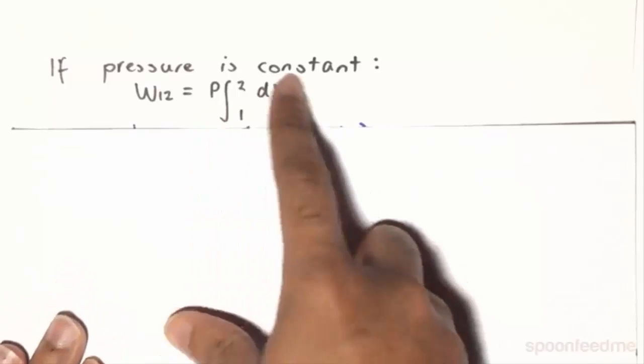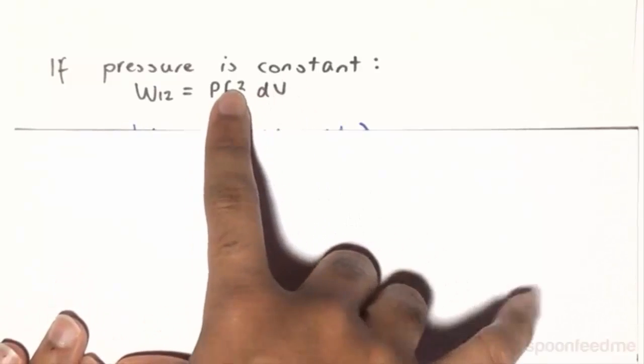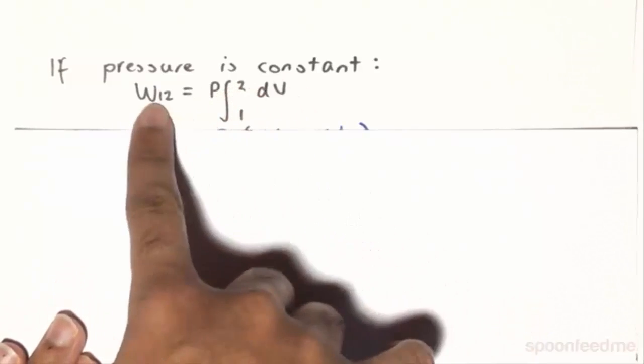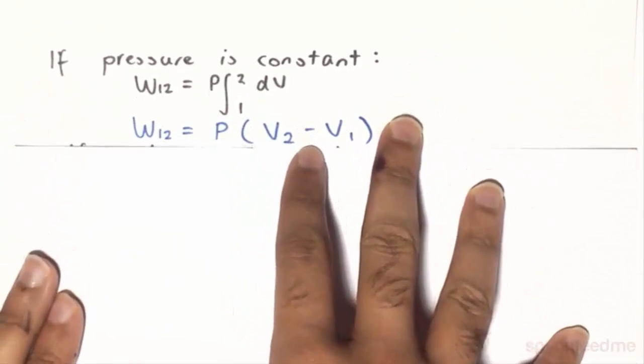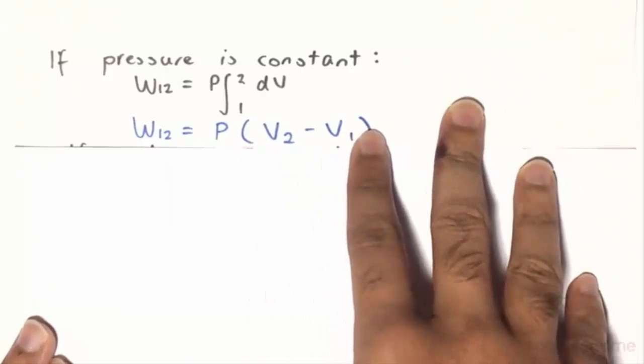And as such, if we evaluate this integral, we will find that the work 1, 2 is just going to be the simple equation of P times v2 minus v1.